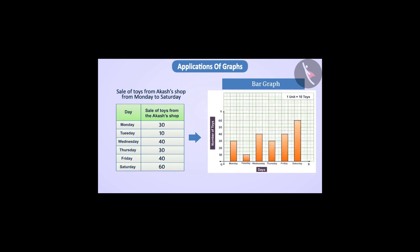As shown in the bar graph, it refers to the sale of toys from Akar's shop from Monday to Saturday. Here, each day's sale is not dependent on the other day. We can easily compare each day's sale. Like here, the highest sales are on Saturday and the lowest sales are on Tuesday.